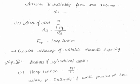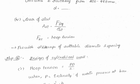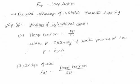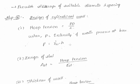The area of steel for the ring beam is given by: Ast = Fht / σst, where Fht is the hoop tension and σst is the permissible stress in steel. Provide stirrups of suitable diameter and spacing.